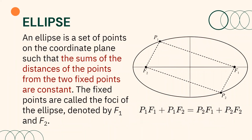Let us define what is an ellipse. An ellipse is a set of points on the coordinate plane such that the sums of the distances of the points from the two fixed points are constant. The fixed points are called the foci of the ellipse, denoted by F1 and F2. Looking at the diagram, considering two points on the ellipse — points P1 and P2 — when we add the distances of P1 to F1 and F2, its sum is equal to the sum of the distances of P2 to F1 and F2 as well. All points on the ellipse have the same sum of distances from the foci.